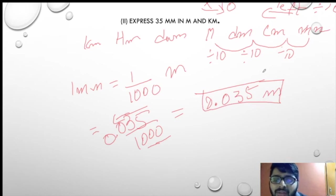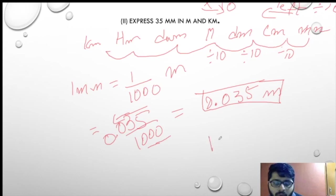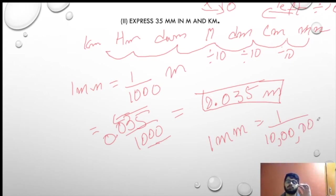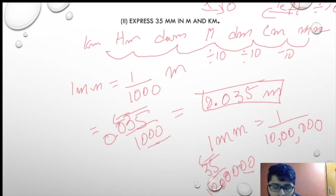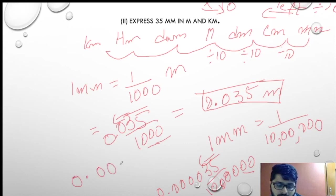Now going from millimeter to kilometer is 6 steps left — 1, 2, 3, 4, 5, 6 jumps. So 1 mm equals 1 upon 10 lakh. Therefore 35 mm equals 35 upon 10 lakh, which is 0.000035 kilometer.